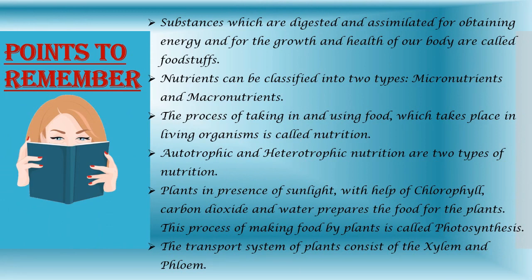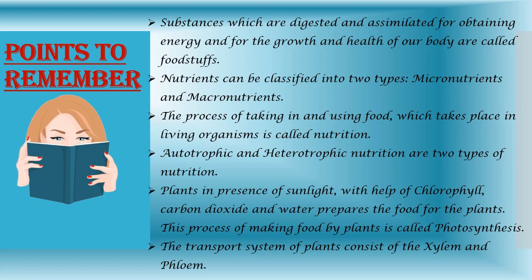So students, this was the end of Module 1. Let us see the points to be remembered. Substances which are digested and assimilated for obtaining energy and for the growth and health of our body are called foodstuffs. Nutrients can be classified into two types: macronutrients and micronutrients. The process of taking in and using food which takes place in living organisms is called nutrition.